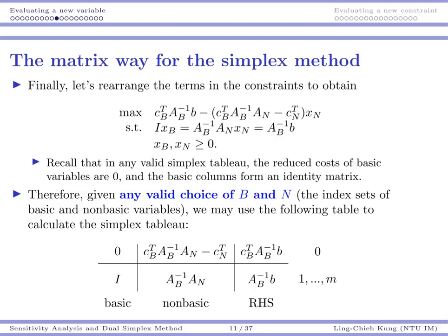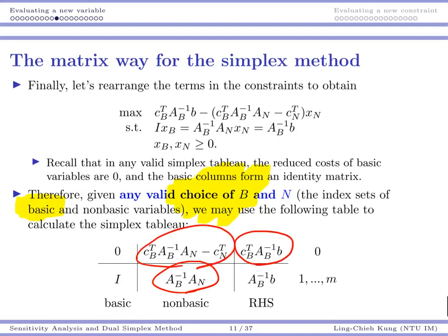The conclusion is: to run the simplex method in each iteration, just give me a set of basic variables. In each iteration we choose basic variables; once chosen, you have B, N, AB, AN, cB, cN. Then calculate all the required quantities using the matrix formulas. With those you have your tableau, check all reduced costs, if needed do the ratio test, perform the pivoting, move to the next basic set, and repeat. Let's see some examples.